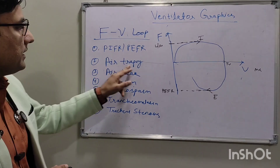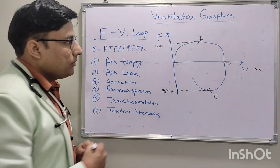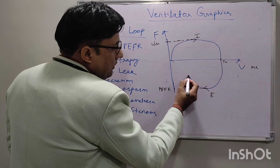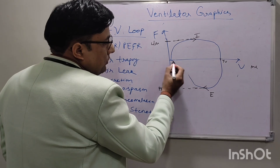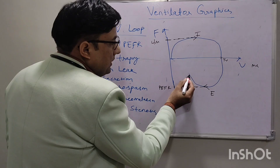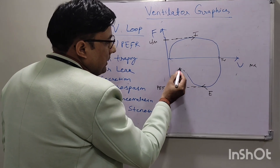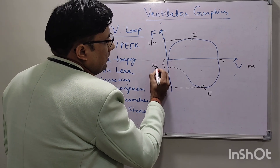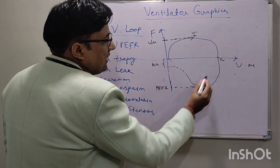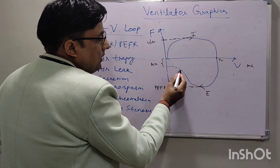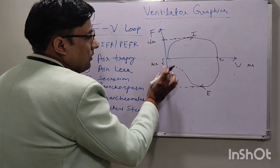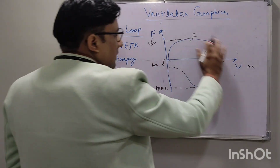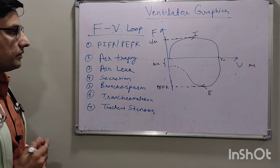In the flow volume loop we can see air trapping. In air trapping, the expiratory curve will not reach zero — it will end here. This much air trapping is happening; the expiratory curve does not return to zero.